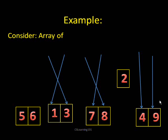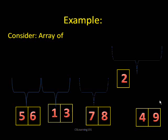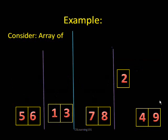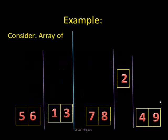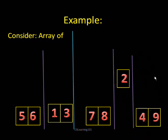Now we have these different lists, and we have to merge them by comparing the first element in each list, now that each list has at least one or more elements. I'll first take care of the last list since it's a bit different. Comparing two and four — two is less than four, so two goes first, then you can put everything else right after it.